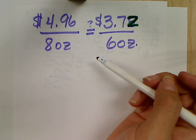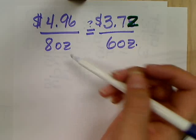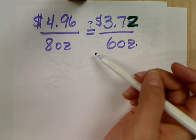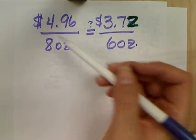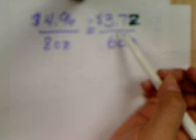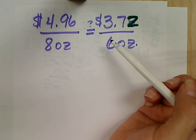I think finding a common denominator would be kind of hard, and I also don't see a trick that I can use for this one. I can't say, well, 496 times what, or divided by what, gives me 372. So I'm left with pretty much only one option, and that is to cross-multiply.